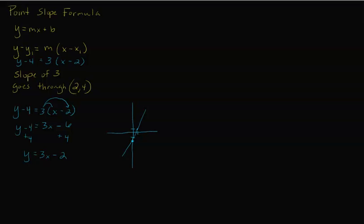Let's do one on your own. It has a slope of negative three and goes through (2, negative seven). Put it into the formula: y minus negative seven equals negative three times (x minus two). Notice that since it's negative seven, it becomes y plus seven — because minus a negative equals a plus — so: y plus seven equals negative three(x minus two).